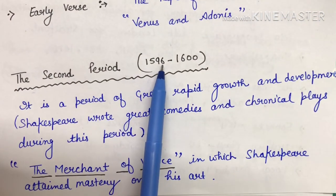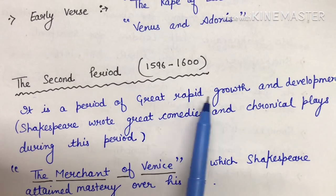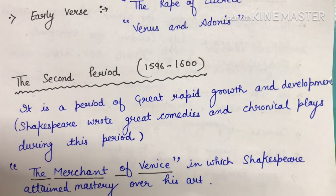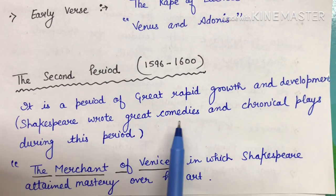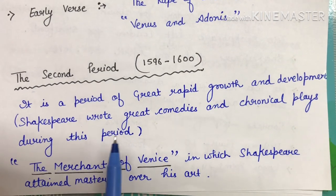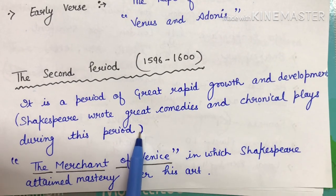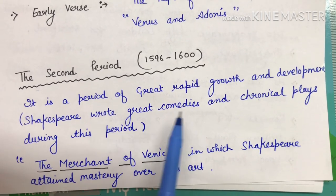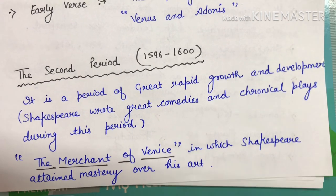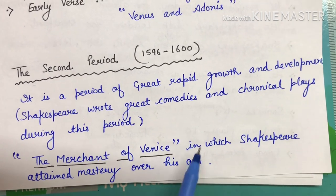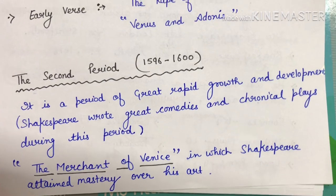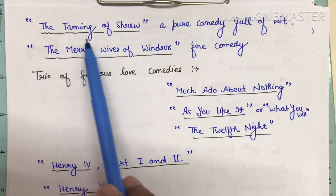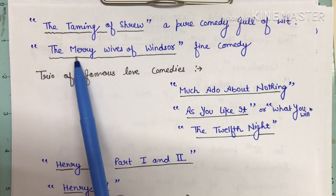The second period starts from 1596 to 1600 — a period of great rapid growth and development. Shakespeare wrote great comedies and chronicle plays during this period. This is a frequently asked exam question: in the second period he produced great comedies and chronicle plays. The Merchant of Venice was the first, in which Shakespeare attained mastery over his art.